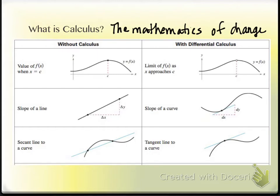With pre-calculus, you're able to find the slope of a line — rise over run and a variety of other formulas. But with calculus, you're actually able to find the slope of a curve. It's always changing, so it has to be at a specific point on the curve for it to be a numerical value that makes sense.